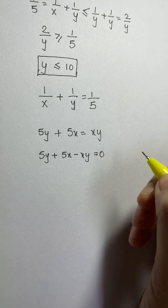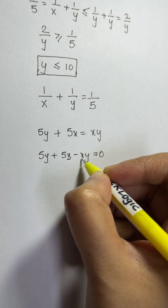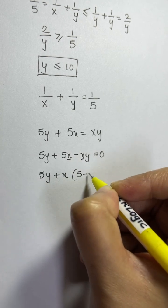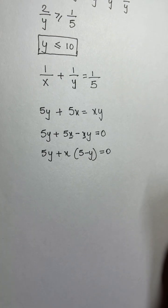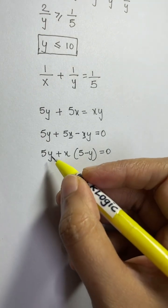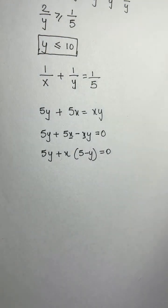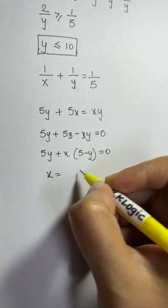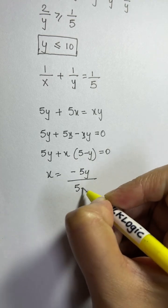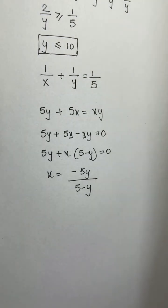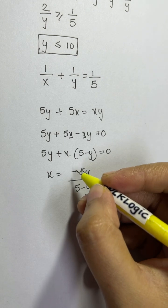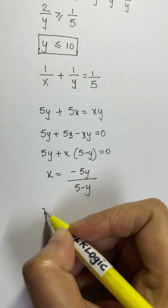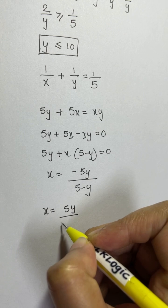We take x as a common factor: 5y + x(5 − y) = 0. Subtracting 5y from both sides and dividing by (5 − y), we get x = −5y/(5 − y). Pulling the negative sign into the denominator: x = 5y/(y − 5).